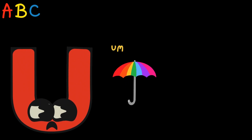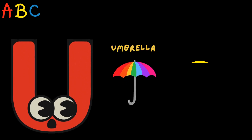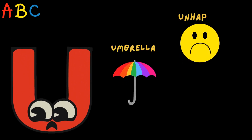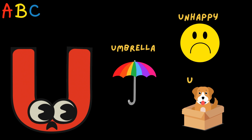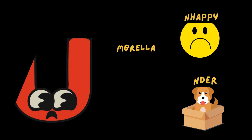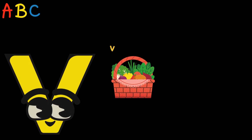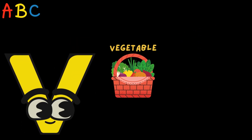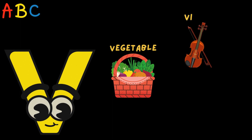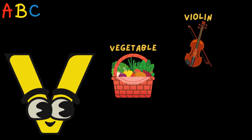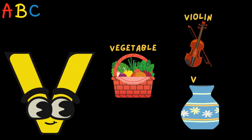U is for Umbrella, Unhappy, Under. V is for Vegetable, Violin, Vase.